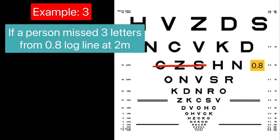Let's understand this with an example. What will be the LogMAR value if a person is not able to read 3 letters from the 2m distance of 3rd line from the top? Remember, the value of 3rd line will be mentioned on the chart, which is 0.8 LogMAR.